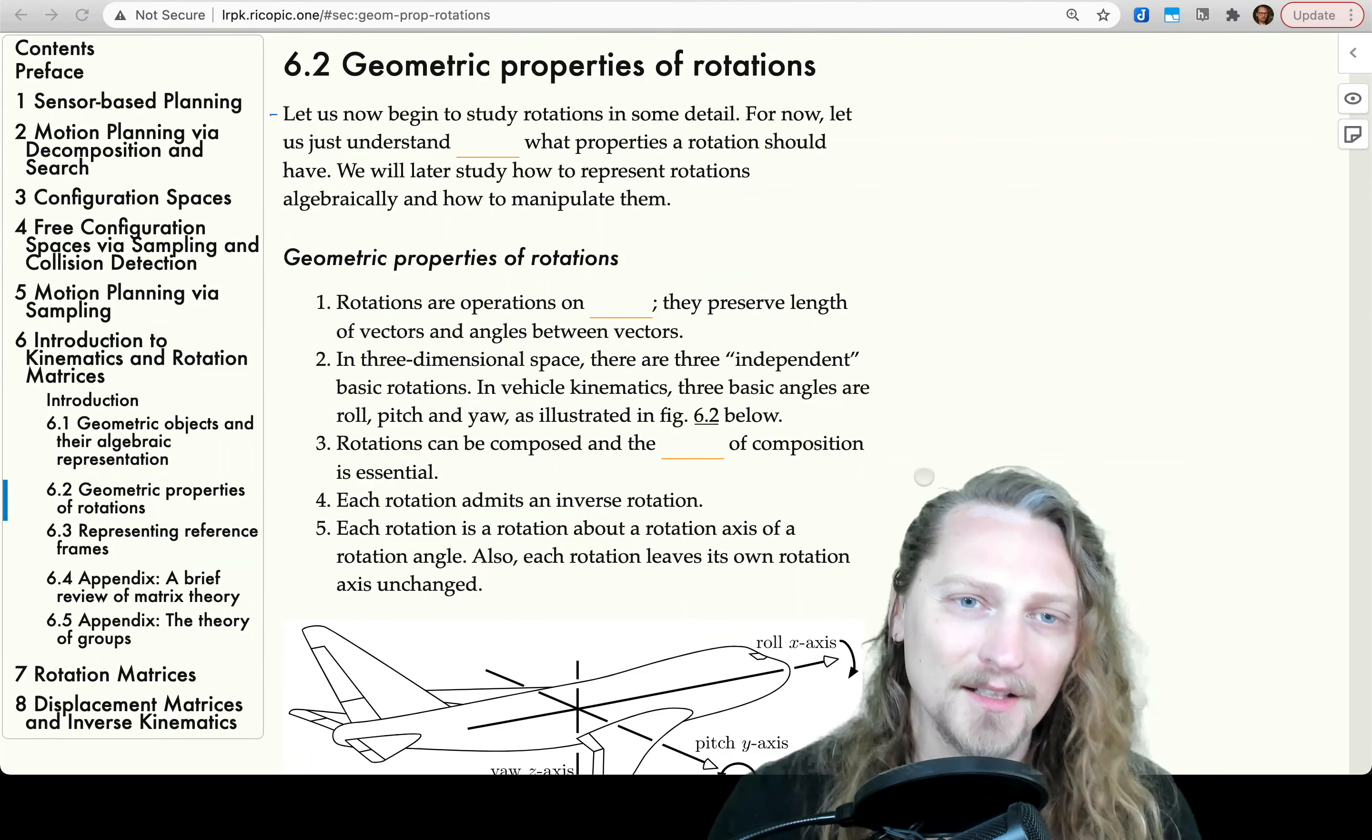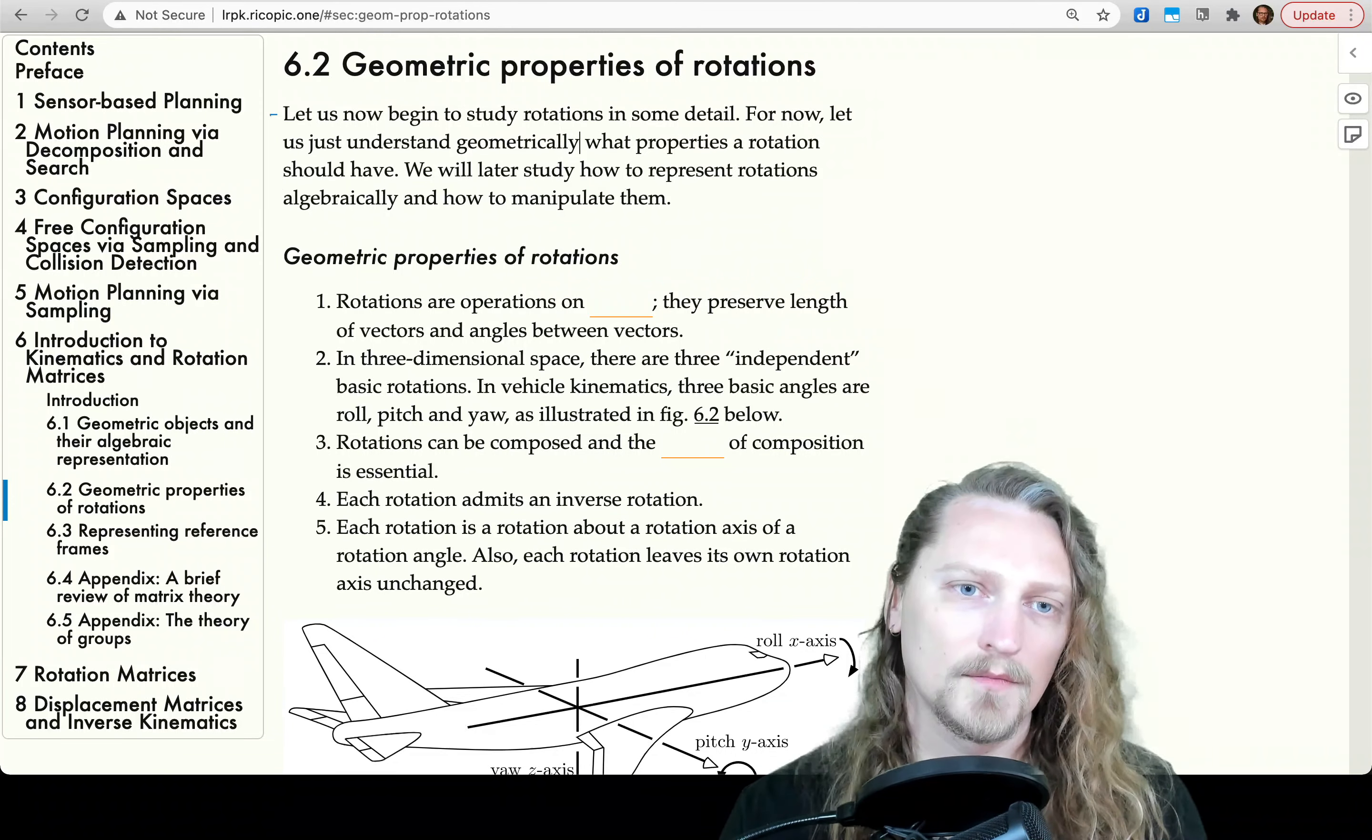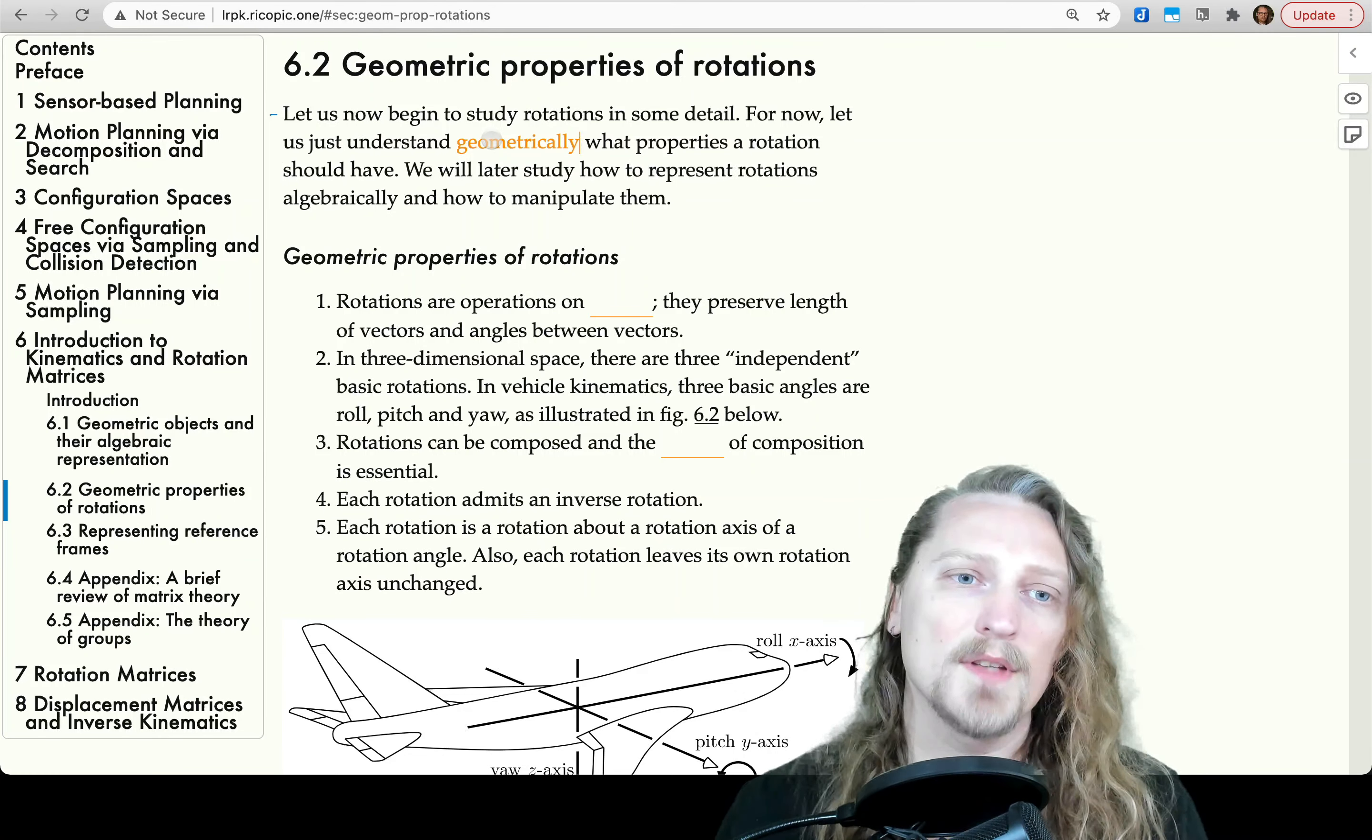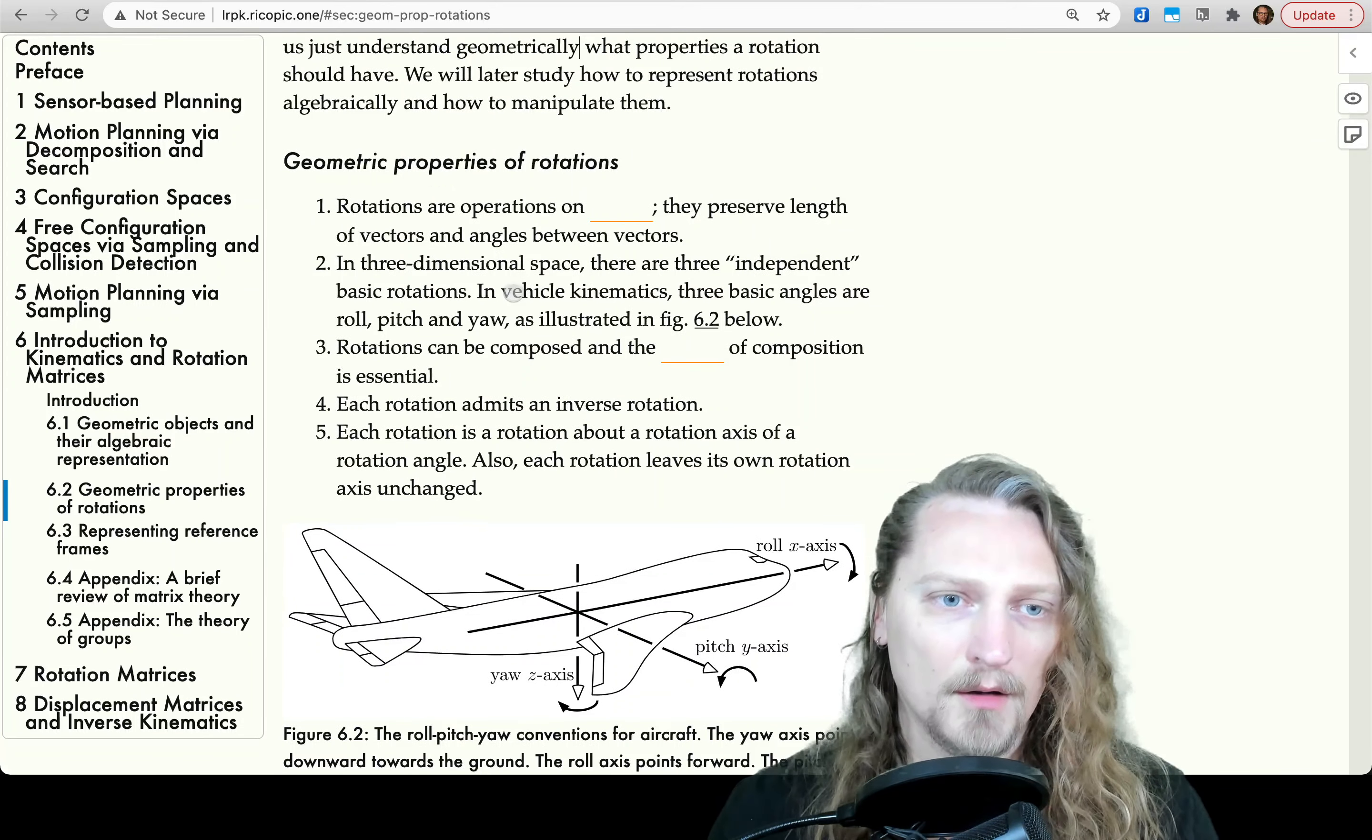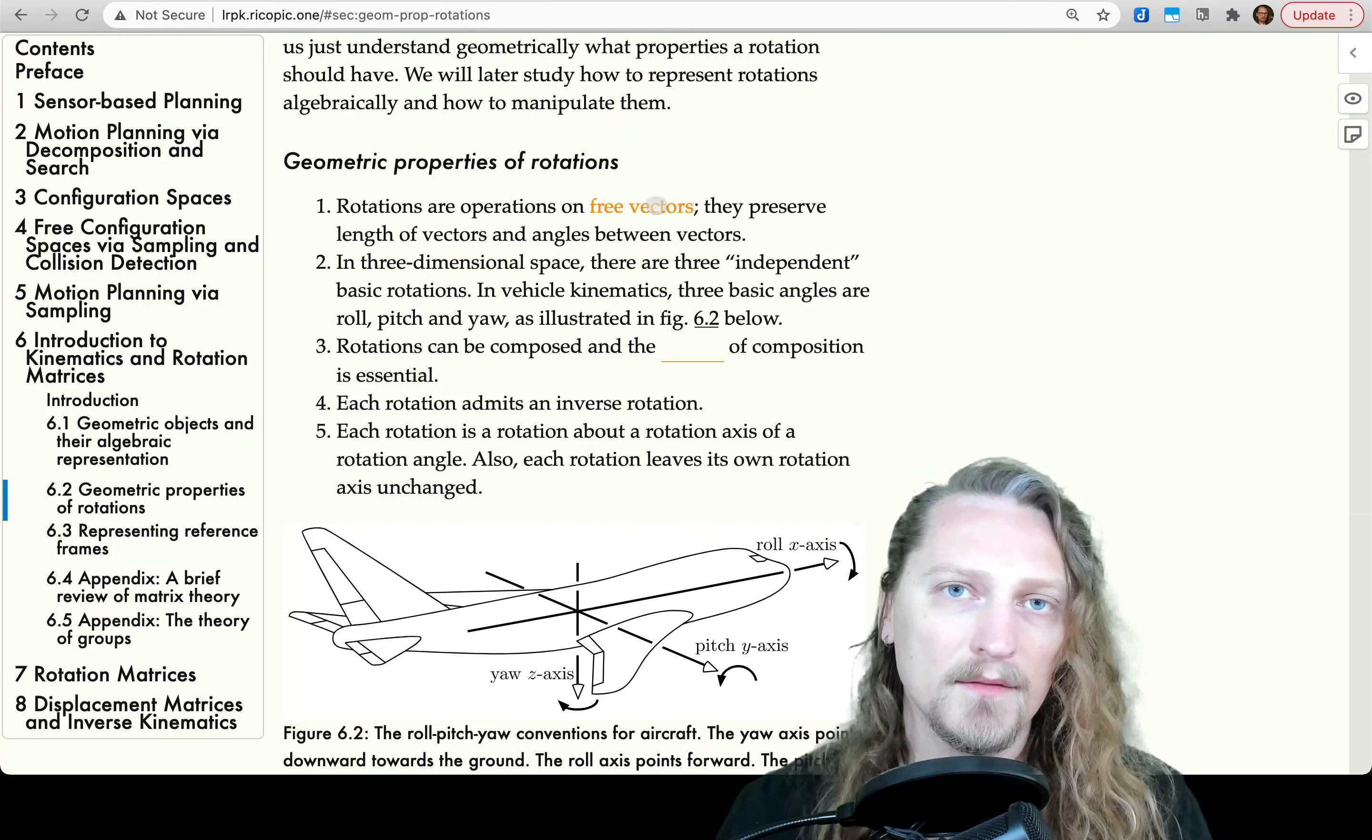Let us now begin to study rotations in some detail. For now, let us just understand geometrically what properties a rotation should have. We will later study how to represent rotations algebraically and how to manipulate them. Geometric Properties of Rotations. Rotations are operations on free vectors. They preserve length of vectors and angles between vectors, too.